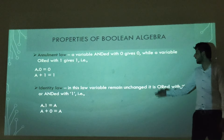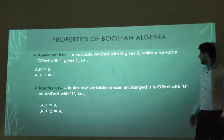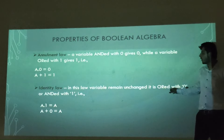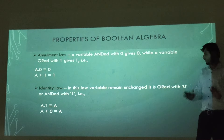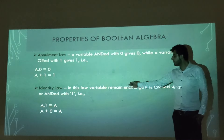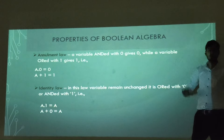Next is the identity law. In this law, variables remain unchanged when ORed or ANDed with 0. As you can see, a dot 0 is equal to 0 and a plus 0 is equal to a.